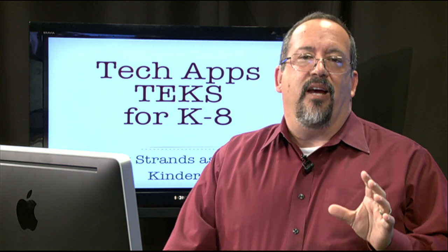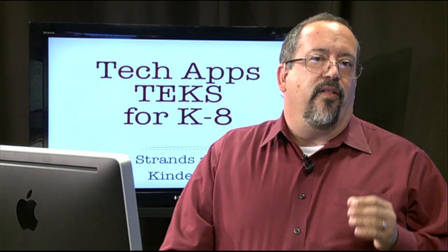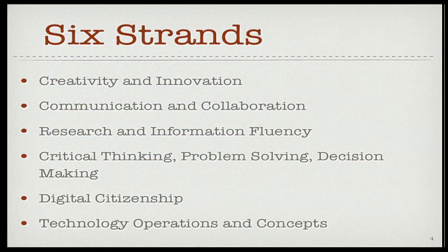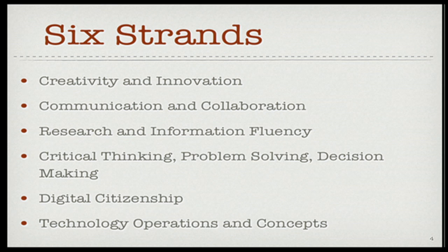So let's take a look at these strands and see what they actually are. They match very well with our NETS for students' strands. The first one is creativity and innovation. The second is communication and collaboration. Third is research and information fluency. Then critical thinking, problem solving, and decision making — that's a big strand, but it doesn't have any more student expectations than the other strands. There's digital citizenship, and then technology operations and concepts.